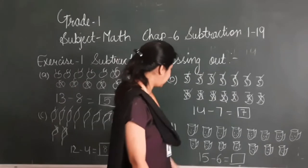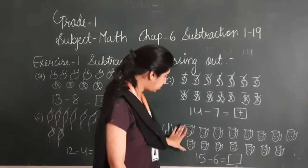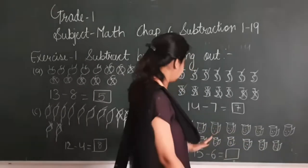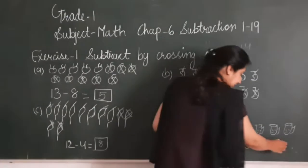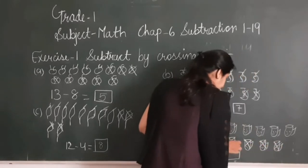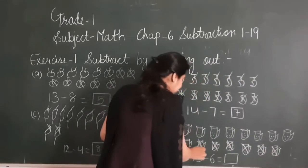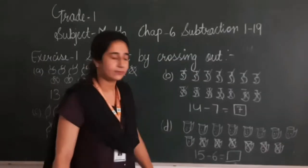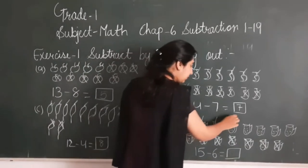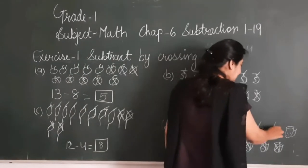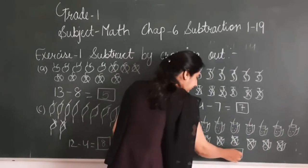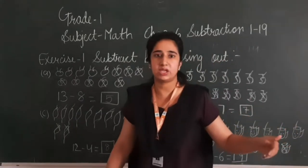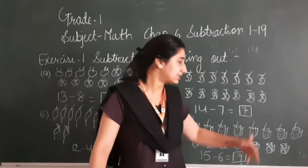Have a look on D now. Here I have drawn 15 objects. Among those 15, I have to give 6 to my friend. So I will cross out 6: 1, 2, 3, 4, 5, 6. So after giving 6 to my friend, among those 15 objects which I was having with me, 9 are left with me.